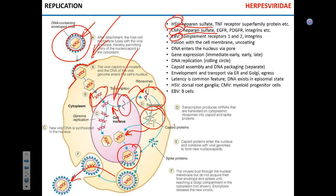Why does viral DNA go to the nucleus? Because it is a bad idea to have DNA in the cytoplasm — human cells have mechanisms that detect cytoplasmic DNA and trigger apoptosis. That's the last thing the virus wants, so it hides its DNA in the nucleus where DNA is supposed to be. Then viral genes get expressed through transcription and translation, and proteins are used to build a new virus.